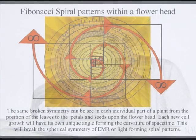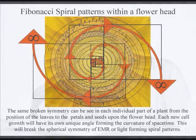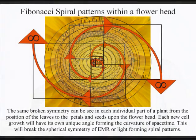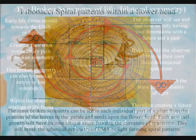This broken symmetry can be seen as spiral symmetry in plant life and as line symmetry in intelligent life forms.